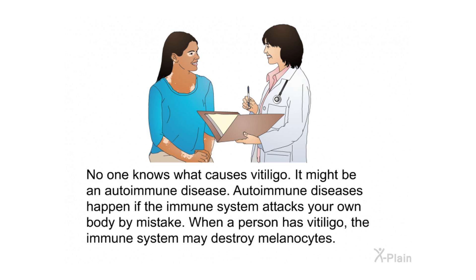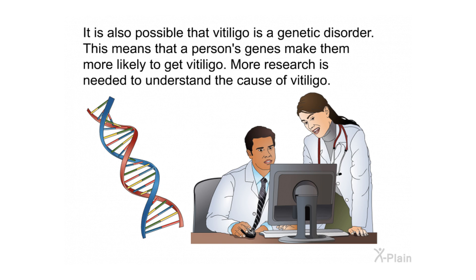No one knows what causes vitiligo. It might be an autoimmune disease — autoimmune diseases happen when the immune system attacks your own body by mistake. In vitiligo, the immune system may destroy melanocytes. It is also possible that vitiligo is a genetic disorder, meaning a person's genes make them more likely to develop it. More research is needed to understand the cause.